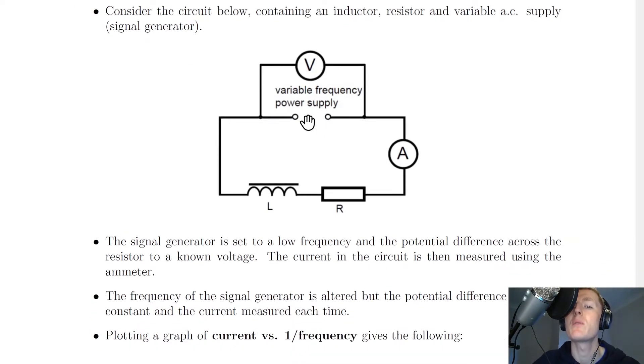So notice how we've got a variable frequency power supply like a signal generator with a voltmeter in parallel across it. We've then got an iron core inductor and a resistor in series with an ammeter.